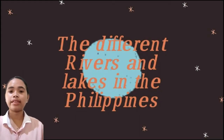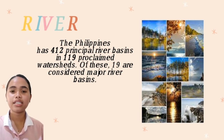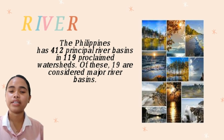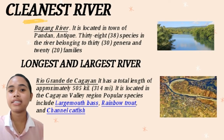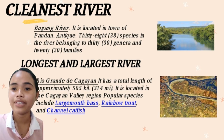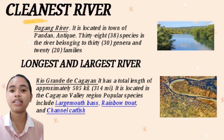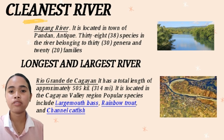The Philippines has 412 principal river basins and 119 proclaimed watersheds, of which 19 are considered major river basins. The cleanest river is the Bugnay River, located in the town of Pandan, Antique, with 38 species belonging to 30 genera and 20 families. The longest and largest river is the Rio Grande de Cagayan, with a total length of approximately 505 km, located in the Cagayan Valley region.